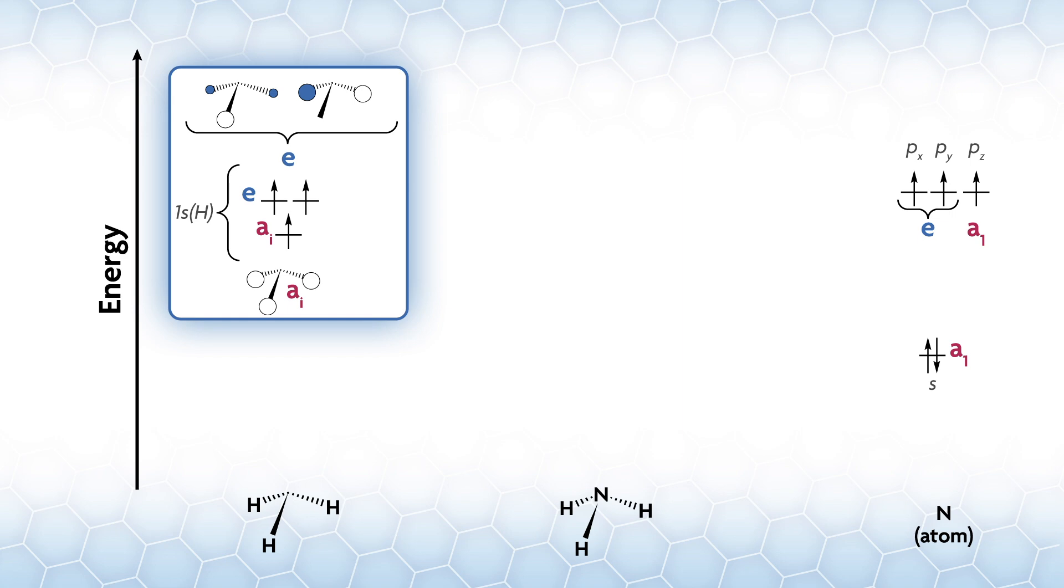The start of our MO diagram looks like this. All our hydrogen SALCs start with more or less the same energy because the hydrogens are non-interacting. Each hydrogen has one electron each, so we'll have a total of three on the left side. On the right, we have the five valence electrons of nitrogen.